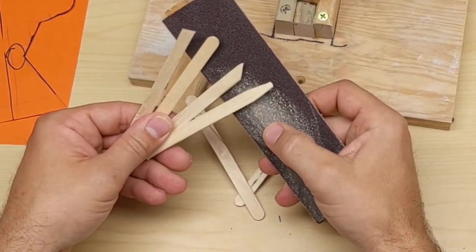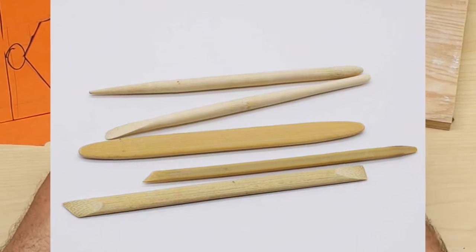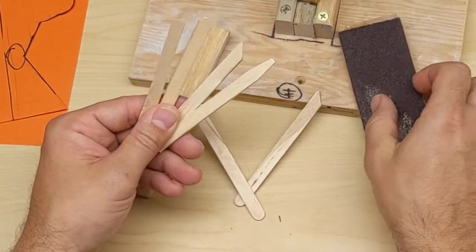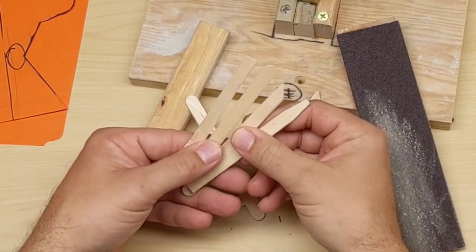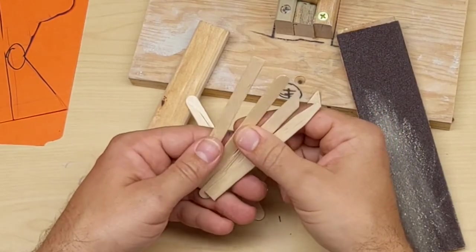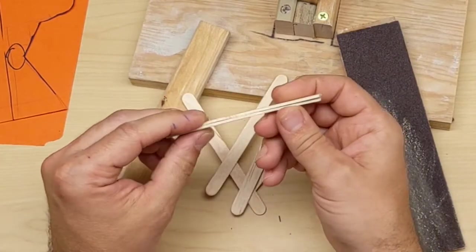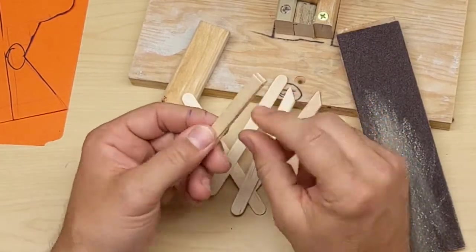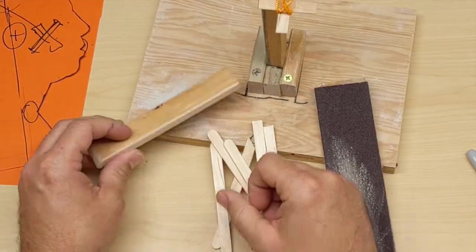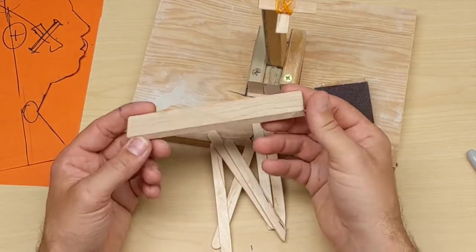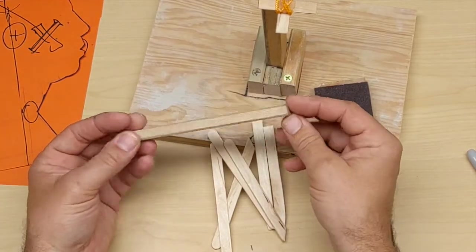If you were to look at most sculpting tools, you'd see that they're either flat, round, angled, or pointed. And so I've taken these popsicle sticks and cut them into those basic positions. I'm going to double them up, glue them together, add a little bit of tape, and then sand them to the tip that I want. One other tool that you may want to have is something that will help you give flat planes, and just a simple stick will work there.